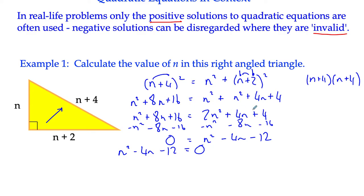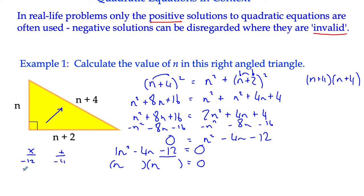There are various ways to do that, but we've got a quadratic equation now which we should be able to solve. In these types of examples we shouldn't need the quadratic formula — they should factorize. It's 1n squared, so it's n and n. We're looking for factors of negative 12 that add together to give negative 4. Factors of negative 12: 1 and 12, 2 and 6, 3 and 4. It's going to be 2 and 6 — positive 2 and negative 6. Check: they multiply to give negative 12 and add to negative 4. Factorized.